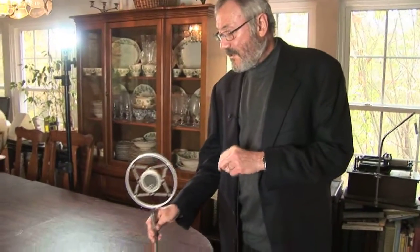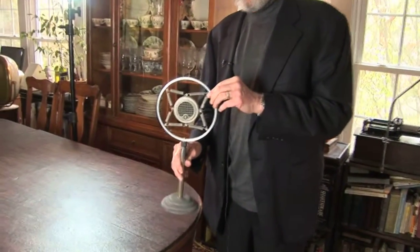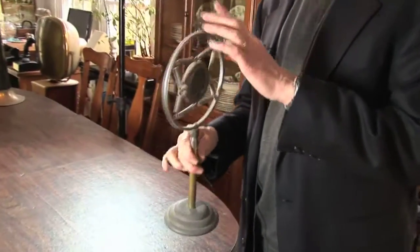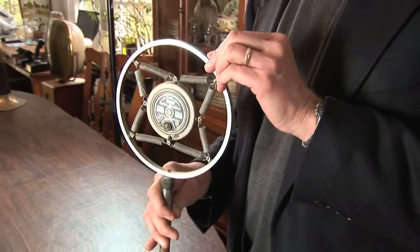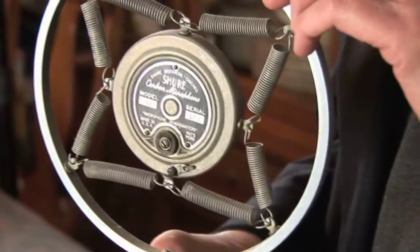This is an example of a later version of the carbon button microphone. This is a Shure 1B microphone, which I think dates from the 1920s. You can almost see Walter Winchell or something talking through this thing. It incorporates a carbon button in the interior.